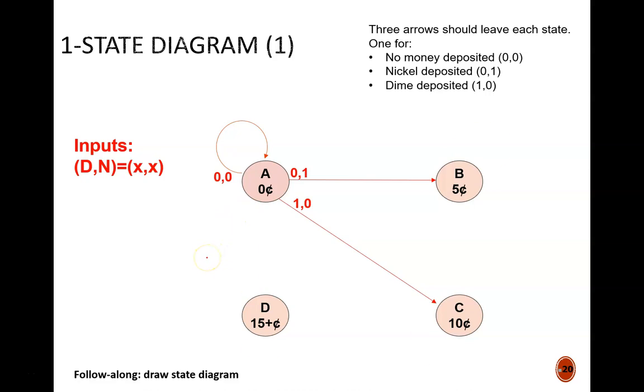Here is my completed state diagram. Inspect it closely. I imagine you may have handled some of the arrows differently, especially with state D. But before we get there, let's look at the more typical nodes. Let's say the machine is at state B, or 5 cents. If we deposit no coins, we stay right there. If we deposit a nickel, we move up to state C. If we deposit a dime, we move up to state D. Nothing too surprising there.